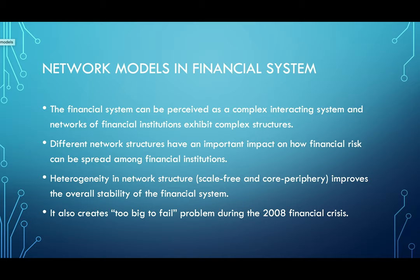However, heterogeneous networks also create a too-big-to-fail problem, as seen during the 2008 financial crisis. The too-big-to-fail problem means there are systemically important nodes that play the role of stabilizer against random shocks in the financial system. But if these big banks or financial institutions have a problem in their financial balance sheet, they might spread that risk to the entire system. Therefore, it is very important to understand how different network models have an impact on evaluating financial risk. I hope you enjoyed this short video about how network models can be applied in evaluating financial risk in the financial system.